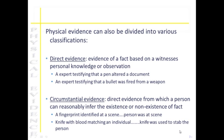Circumstantial evidence is evidence that can reasonably infer the existence or non-existence of a fact. A good example is a fingerprint from a crime scene that's identified to a certain individual — the circumstantial evidence shows that that person was at one time at that scene. Or a knife that has blood matching an individual — you can reasonably infer that that knife was used to stab the person whose blood was on the knife.